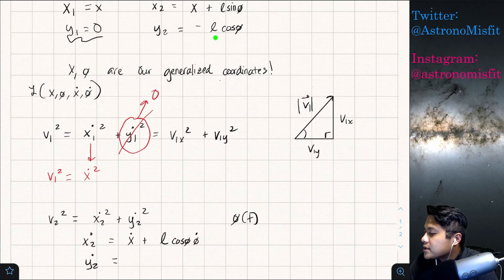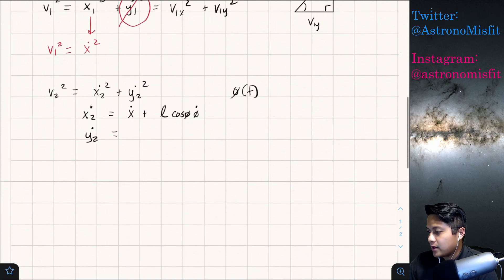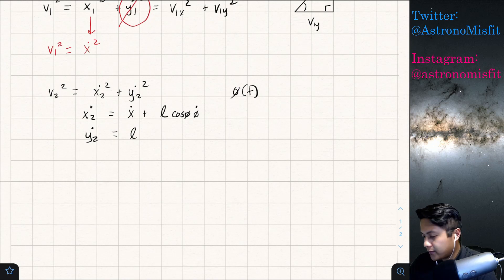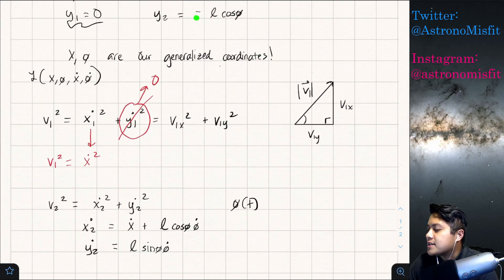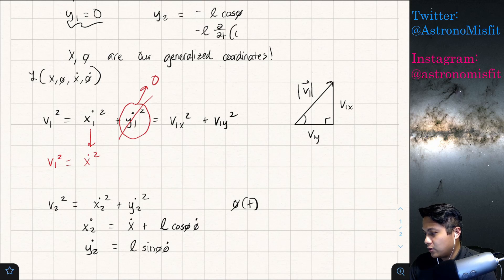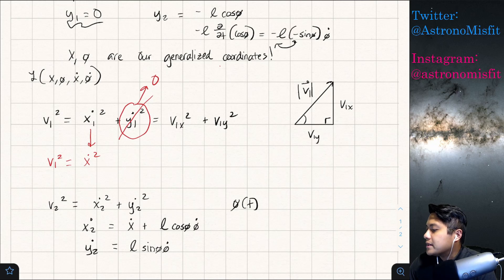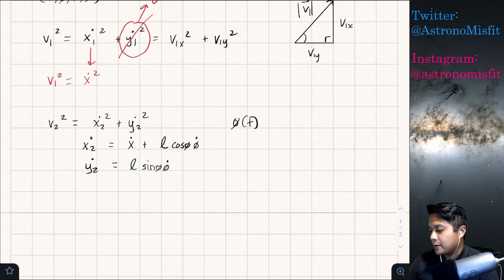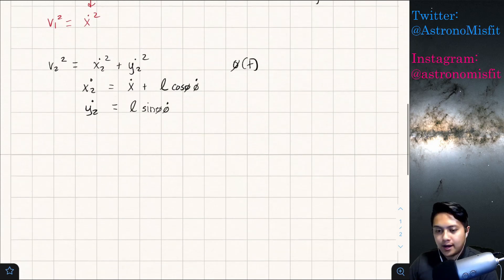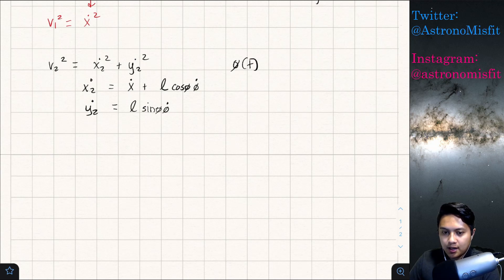And so if we take the derivative of this and we obey the chain rule, we should get l sine phi, phi dot. Again, that's just taking the derivative of this. Effectively, you could have, this essentially looks like negative l times the time derivative of cosine of phi. Cosine of phi, the derivative of that is negative sine phi. So it's negative l negative sine phi, phi dot. And then the minus signs are going to give you a plus sign because they cancel each other out. And that's exactly what we have. So we have both the x2 dot and the y2 dot.